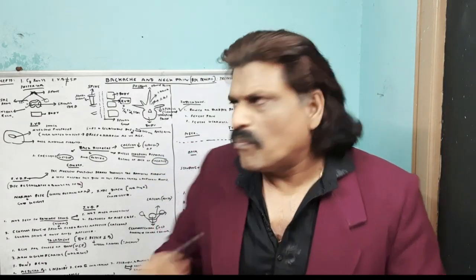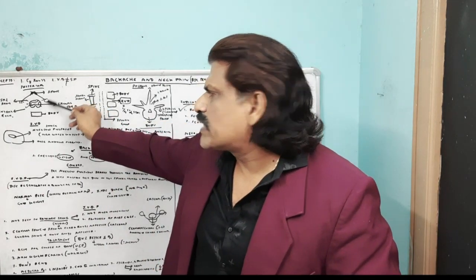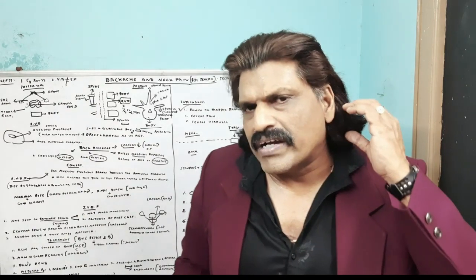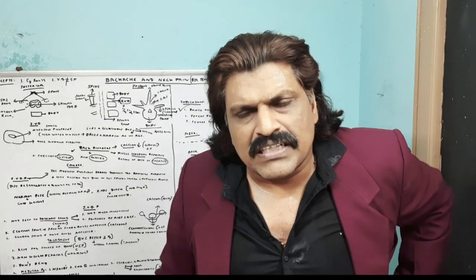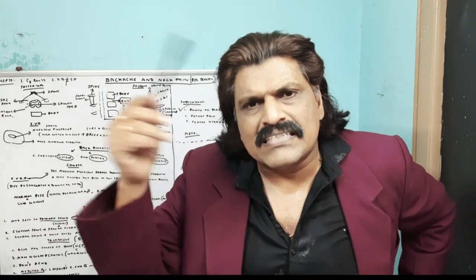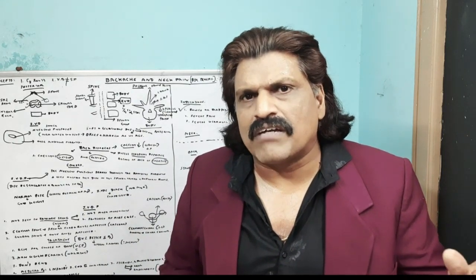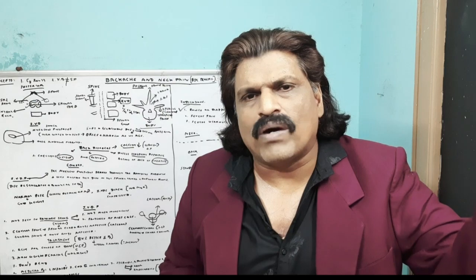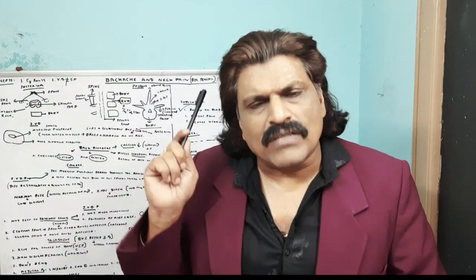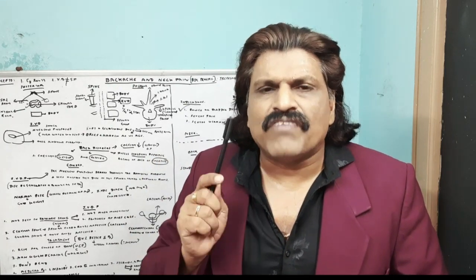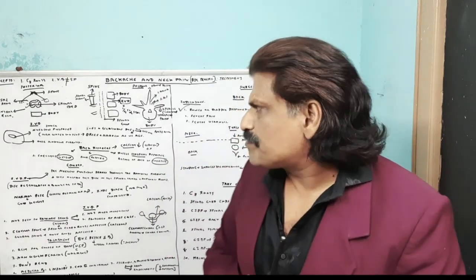This gives us an important concept: in cervical disc prolapse, both the spinal cord and the roots get affected. But in lumbar disc prolapse, since the spinal cord ends at L1, only the roots get affected — the cord is not involved. So cervical disc prolapse affects both cord and roots, whereas lumbar disc prolapse affects only the roots.